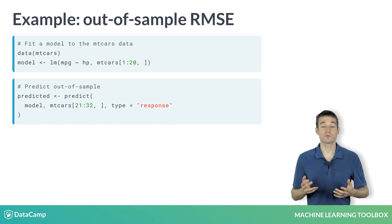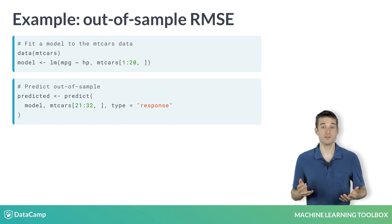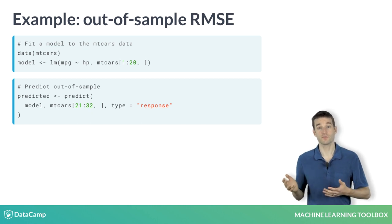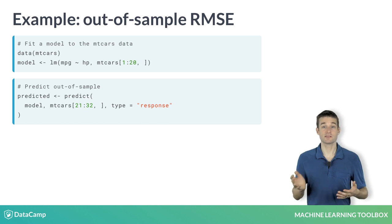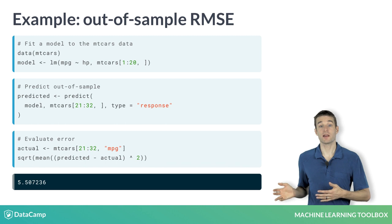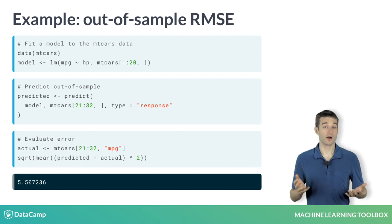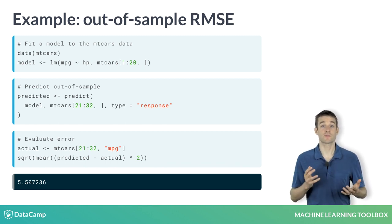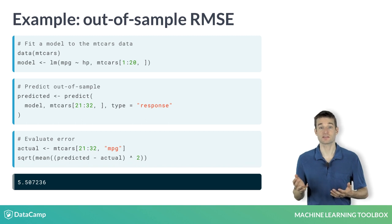In practice, rather than manually splitting the dataset, we would actually use the createResamples function or createFolds function in caret, but the manual split simplifies this example. Finally, we calculate root mean squared error, or RMSE, on the test set by comparing the predictions from our model to the actual MPG values for the test set.